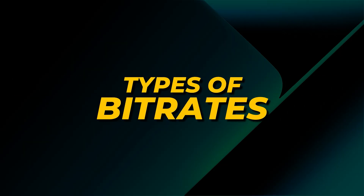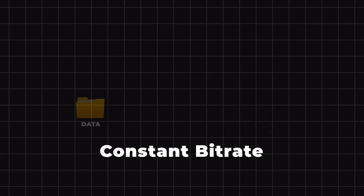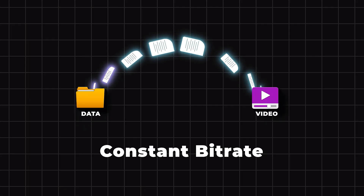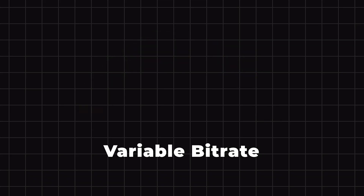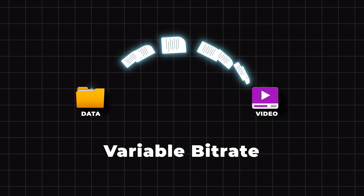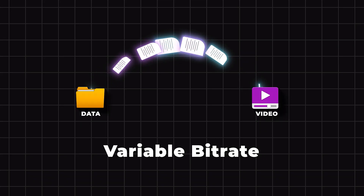Types of BitRates: BitRate can be constant, where the data rate remains consistent, or variable, where the data rate can fluctuate depending on the complexity of the video content.